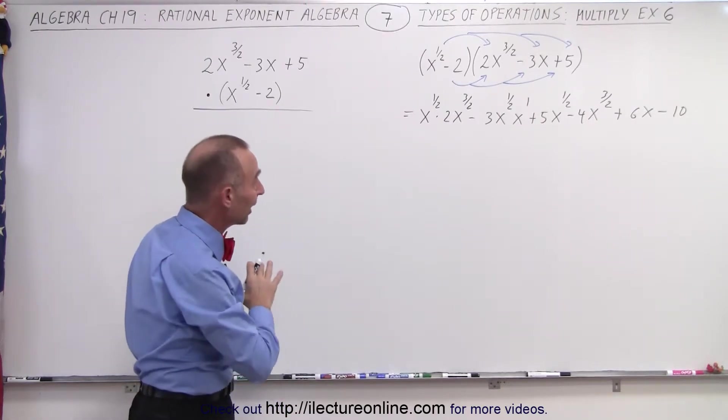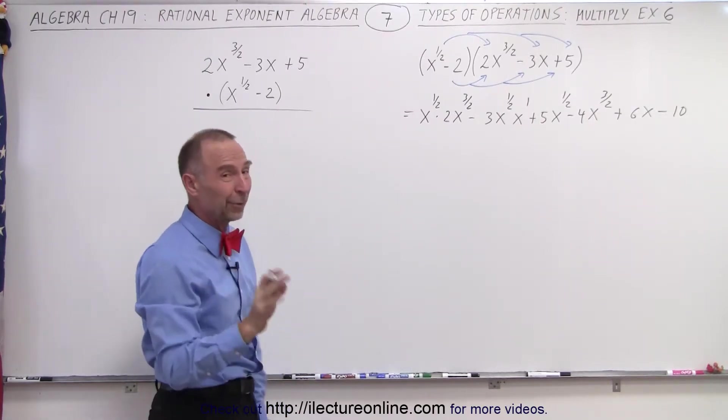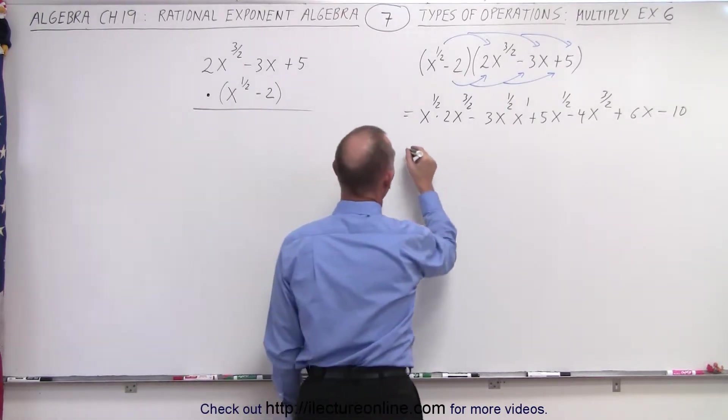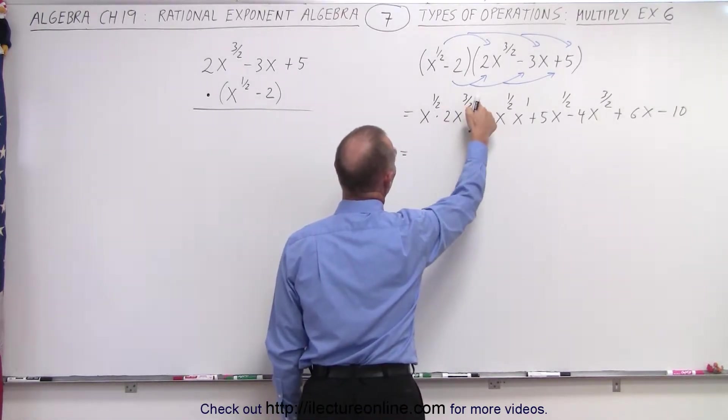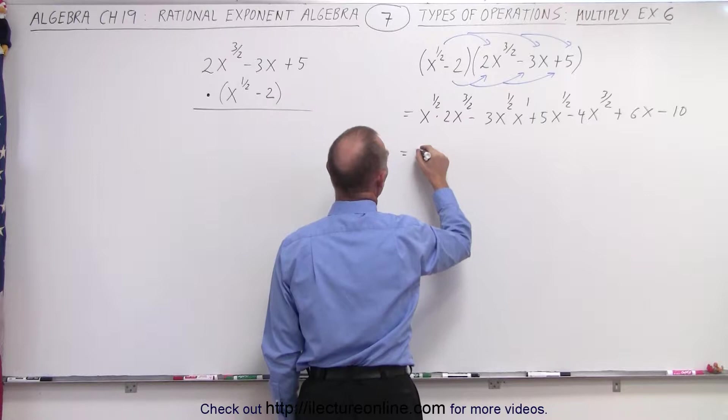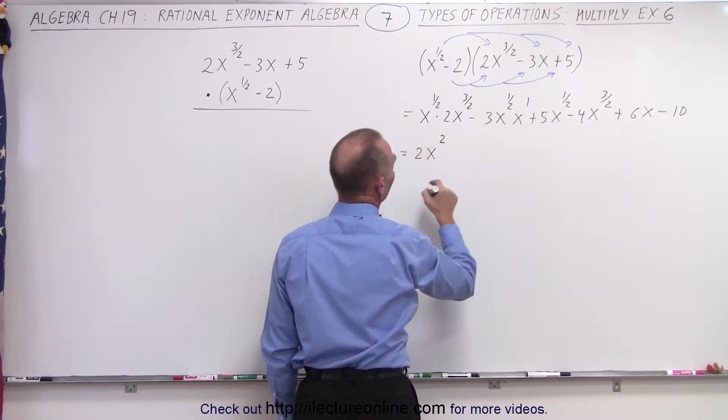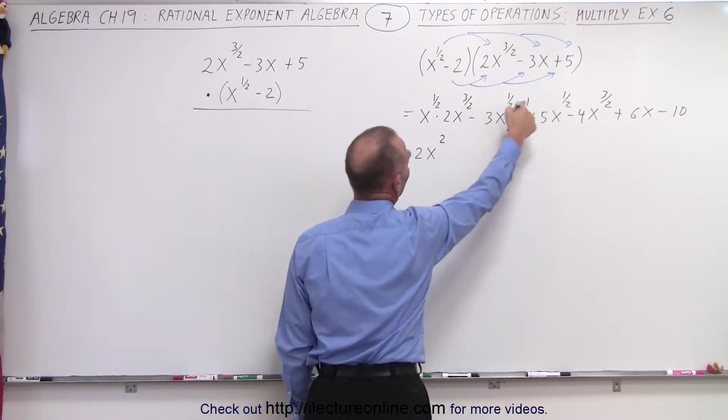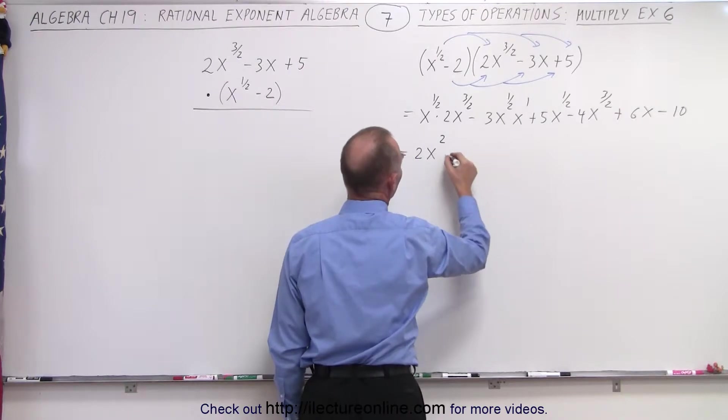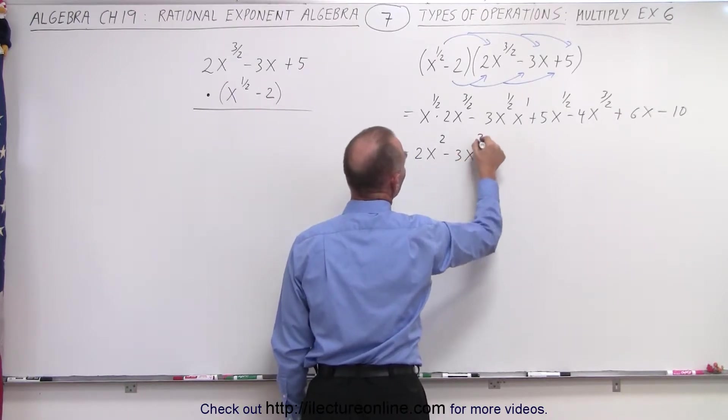Before we do that, we probably want to go ahead and add exponents first, because we're not ready yet to collect common terms. So this is equal to 1 half plus 3 halves is 4 halves, which means 2x to the second power. Here we have x to the 1 half plus 1, that's 3 halves, so minus 3x to the 3 halves power.